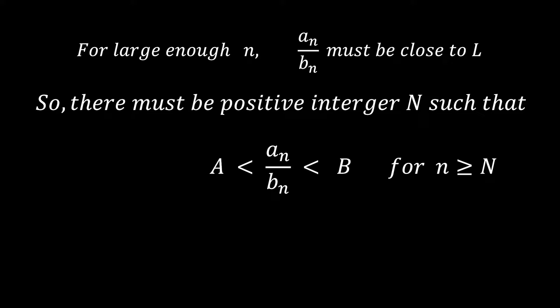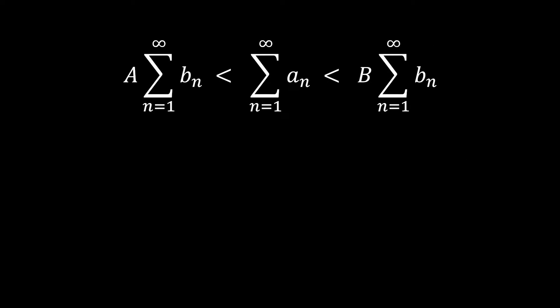Now let's multiply both sides of the inequality by b sub n. Since b sub n is positive, we have a sub n is greater than capital A times b sub n and less than capital B times b sub n. Applying sigma notation to each term of the inequality, we obtain the inequality as shown on the screen. Since capital A and capital B are constants, they are placed outside the sigma notation.